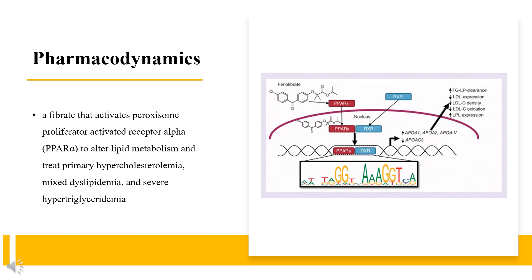Fenofibrate is a fibrate that activates peroxisome proliferator-activated receptor alpha (PPAR-alpha) to alter lipid metabolism and treat primary hypercholesterolemia, mixed dyslipidemia, and severe hypertriglyceridemia. It requires once-daily dosing and has a half-life of 19–27 hours, giving it a long duration of action. Capsules are given at a dose of 50–150 mg daily. Patients should be counseled about the risk of rhabdomyolysis, myopathy, and cholelithiasis when taking fibrates.